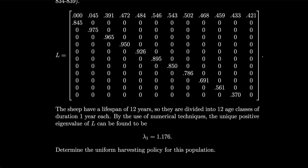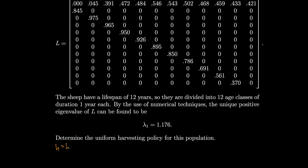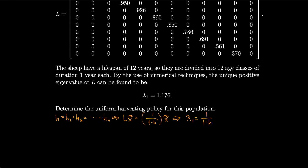We want to determine the uniform harvesting policy for this population. Setting h1 equal to h2 and so on gives us Lx equals (1 over 1 minus h) times x, meaning the eigenvalue here must be 1 over (1 minus h). Solving for h: h equals 1 minus 1 over lambda_1 equals 1 minus 1 over 1.176, which gives h equals 0.150.